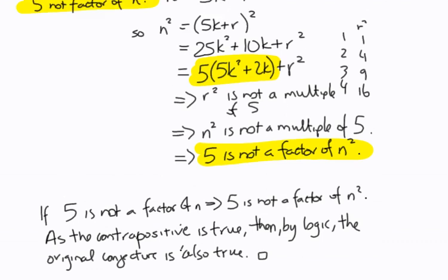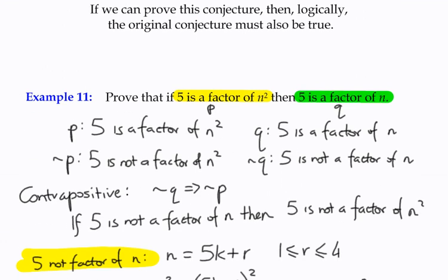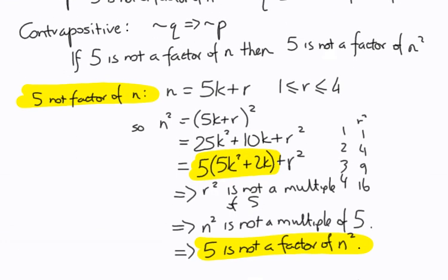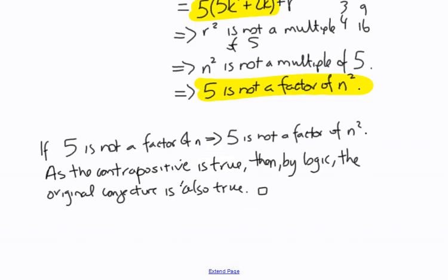So, proof by contrapositive first requires us to understand the structure of our statement. We form the negation of Q implies negation of P — we work that out from the original conjecture and create the contrapositive. We then go through and find a way, usually using algebra, of proving that the contrapositive is true. And if the contrapositive is true, then by logic the original conjecture is therefore also true. I've got another example — Example 12 — which is probably slightly easier. Check out the next one, and hopefully that will help reinforce the idea of proof by contrapositive.